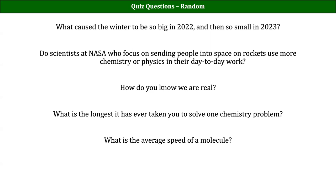The inch-to-centimeter conversion is also exact — less obvious, but back in the 1980s they actually redefined what an inch was. Before that, the metric and imperial systems were completely separate with no exact conversion. They changed the inch to be exactly 2.54 centimeters so there would be an exact conversion between metric and imperial units.